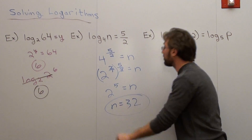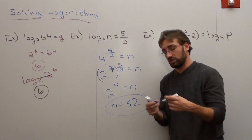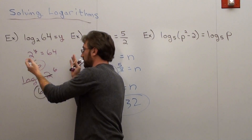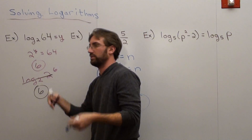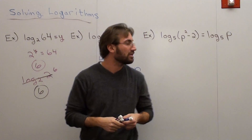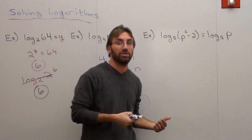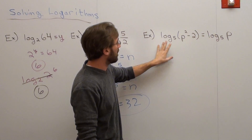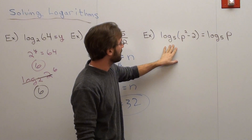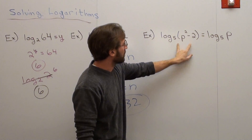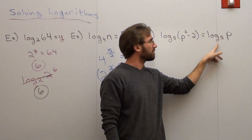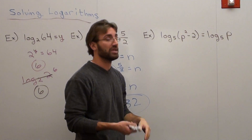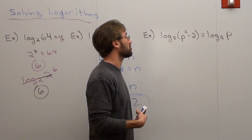So n equals 32. I can't put a variable because the variable was there to actually solve it. Now for this next problem, I've got log base 5 of the quantity p squared minus 2 equals log base 5 of p. I'm supposed to figure out what the p value is in order to make this true.